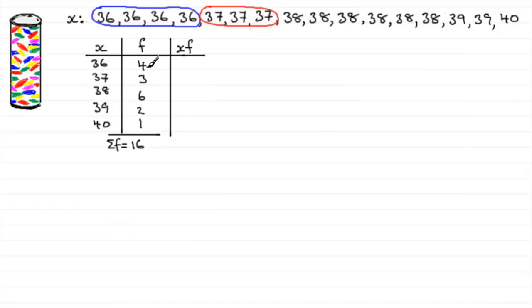And that column is going to be the observed value then times the frequency. So for the 36, I have 4 36's. And if I do 4 36's, I get 144. 3 37's, give me 111. 6 38's, give me 228. And then you've got 2 39's, which come to 78. And finally just the 1 40, which is 40.